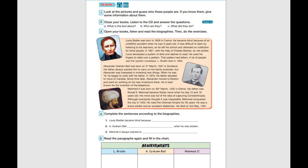Alexander Graham Bell was born on 3rd March 1847 in Scotland. His father always wanted him to carry on the family business, but Alexander was interested in inventing new things. When he was 16, he began to work with his father. In 1870, his father decided to move to Canada. Some time later, Alexander moved to Boston.